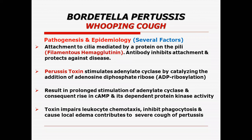There are several factors that contribute towards the pathogenicity of this organism. The organism attaches to the cilia, and this attachment is mediated by a protein present on the pili known as filamentous hemagglutinin, the FHA protein. The antibodies against these filamentous hemagglutinin proteins inhibit the attachment.